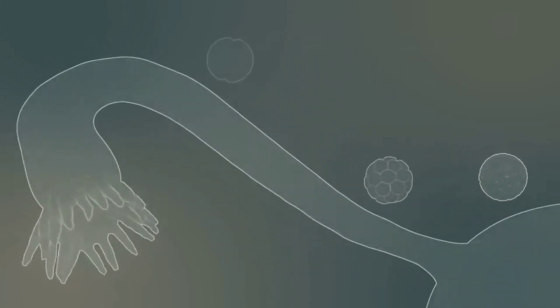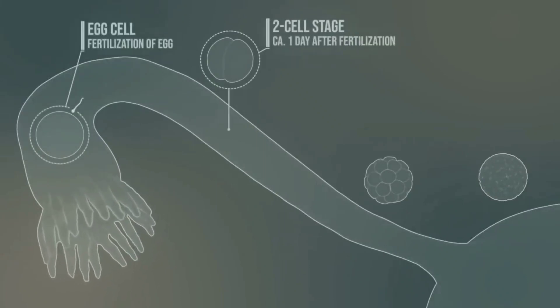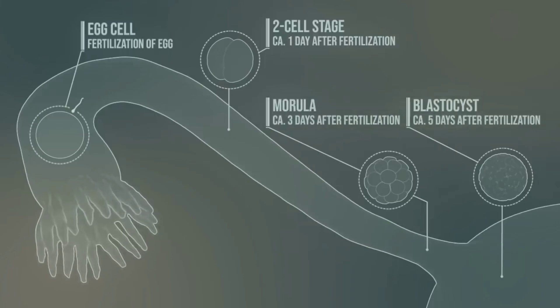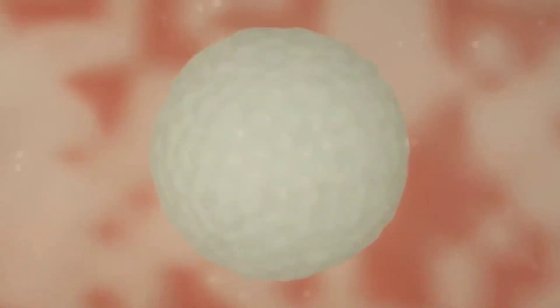Fertilization occurs at the end of the fallopian tube. The first cell division takes place about a day after fertilization. Further cell divisions form the morula, and in the uterus the blastocyst is created. At this stage, the mucous membrane of the uterus has already been prepared for the implantation of the blastocyst. Usually the blastocyst implants in the posterior wall of the uterus, though implantation can also occur on the side. The blastocyst floats in the protective and nourishing uterine mucus.